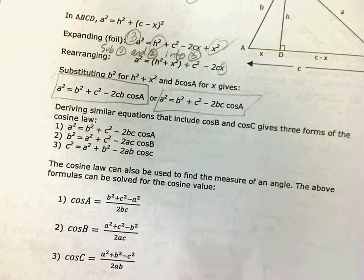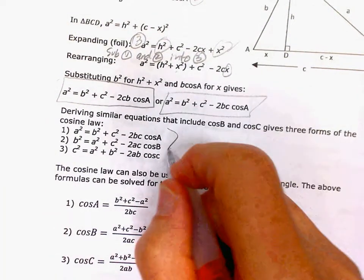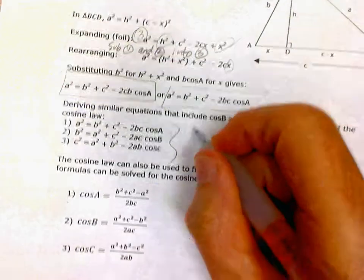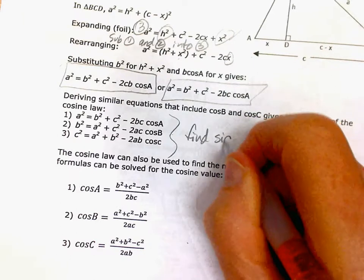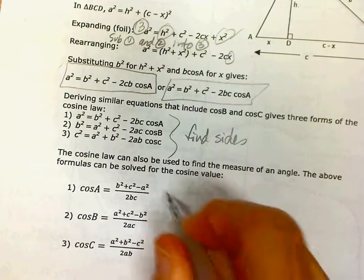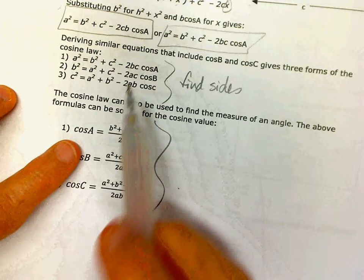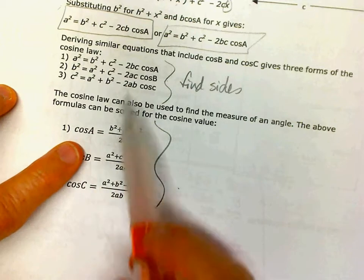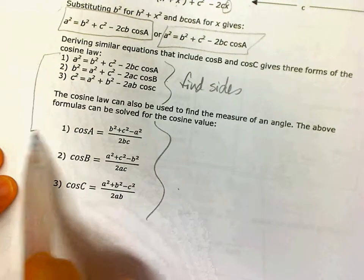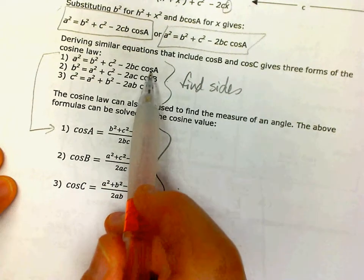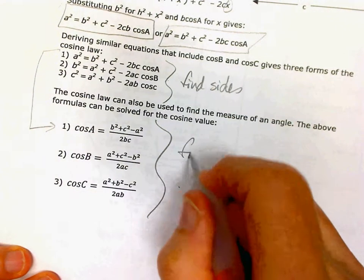Use this version if you want to find sides — it's probably easier. And use this other version if you want to find angles, because it's this same equation but solved for cosine A.